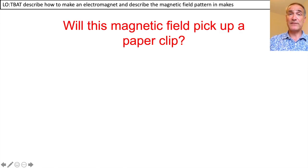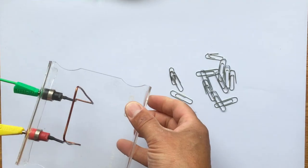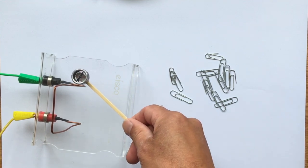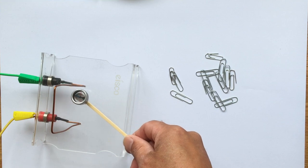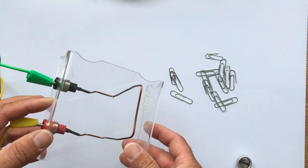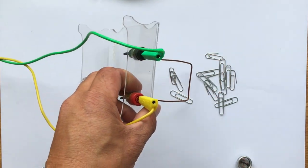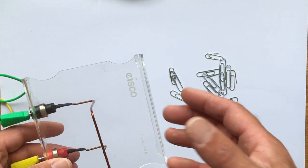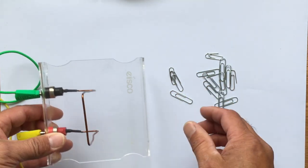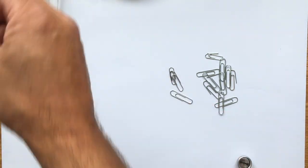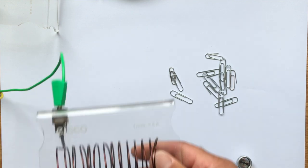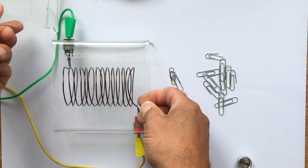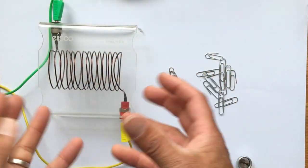With a circular magnetic field around a single wire, is it strong enough to pick up a paper clip? The answer is no — even though steel is a magnetic material, the single wire is not strong enough to be an electromagnet. To make it stronger, we can coil the wire around to make what is called a solenoid.